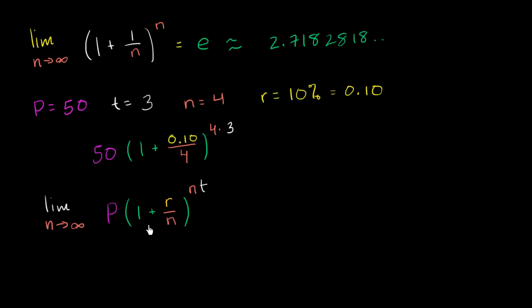As we'll see, this doesn't just go unbounded — we can actually use this to come up with a formula for continuously compounding interest, which is used heavily in finance and banking, and in many things outside of finance, like exponential growth. So let's try to evaluate this. To simplify, I'm going to do a substitution. The goal is to get the expression into a form that looks like the definition of e. I'm going to define a variable x as the reciprocal of r/n, so that I can get 1/x in the expression. So x equals n/r, or equivalently, n equals x times r.